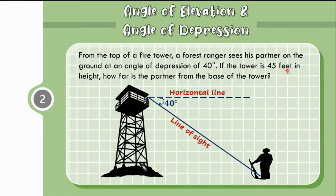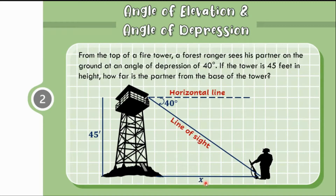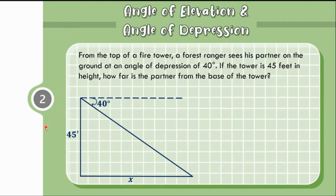The tower is 45 feet in height, so we have here the height of the tower which is 45 feet. We are asked how far the partner is from the base of the tower, so we need to find that distance and let us name it X. Let us get the right triangle formed from this illustration. Since the horizontal line is parallel to the ground line, this angle is equal to 40 degrees by alternate interior angles. We need to find the relationship of 45 feet and X with respect to angle 40.